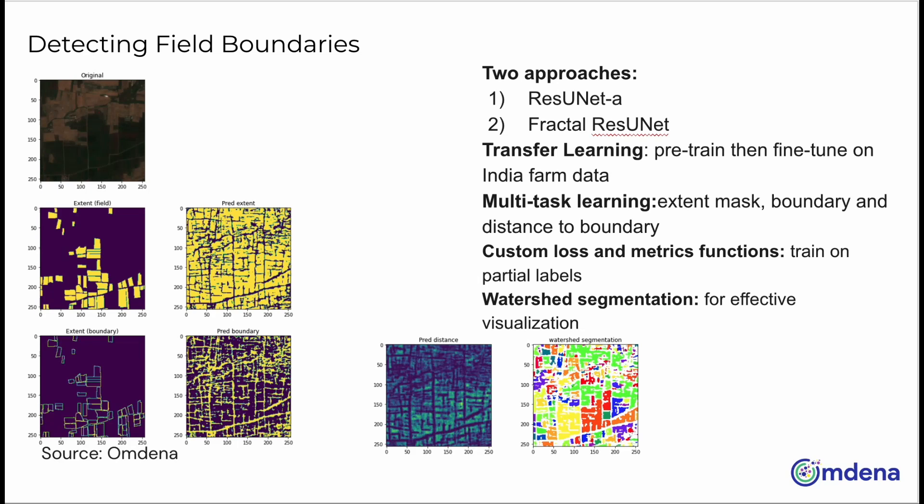Both models also relied on multi-task learning during both pre-training and fine-tuning, learning to predict each field's extent, boundary, and distance to the boundary. The fine-tuning in India was done on partial labels in case of data deficiencies. A mask was created to exclude the unlabeled areas of each image from the loss function and from the calculation of the metrics.